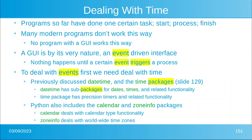Programs we've looked at so far have only done one certain task: they start, process something, and finish. Many modern programs don't work this way. No program with a graphical user interface works this way — a GUI is what we call an event-driven interface. Nothing happens until a certain event triggers a process. An event could be the way the mouse moves, a click, or if you touch the screen.